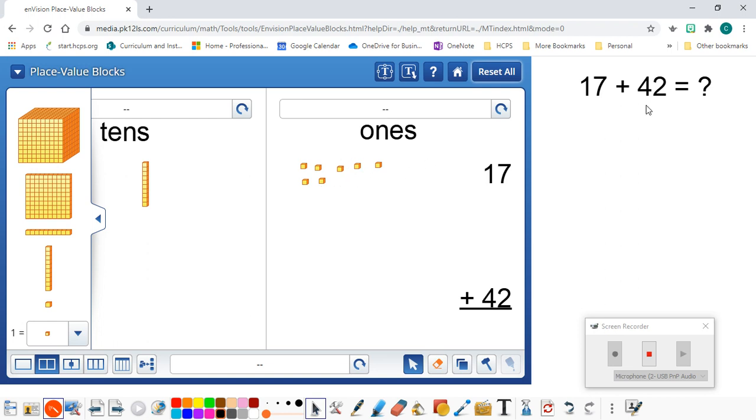And now, we're going to break apart the 42 with four rods and four tens, and two units or two ones. Remember that all of my tens are in the left-hand column. All of my ones are in the right-hand column. My first addend is in the top half, and my second addend is in the bottom half.